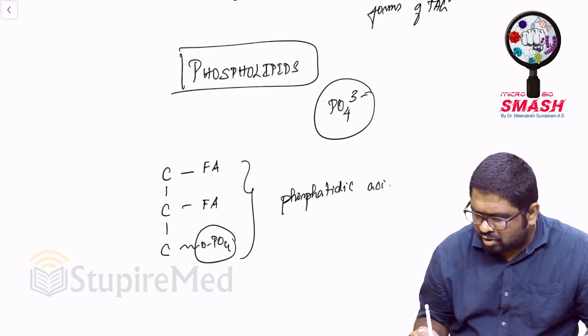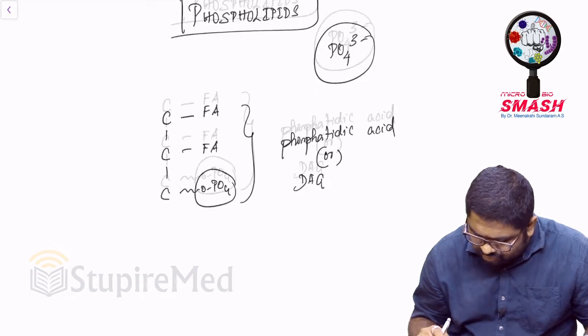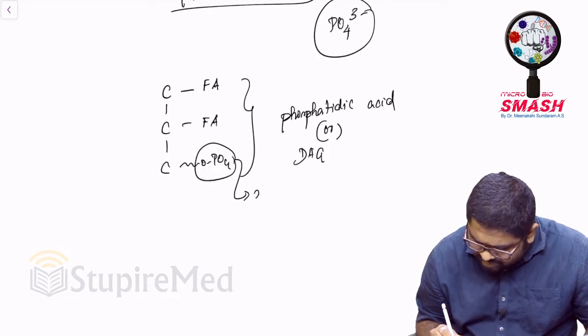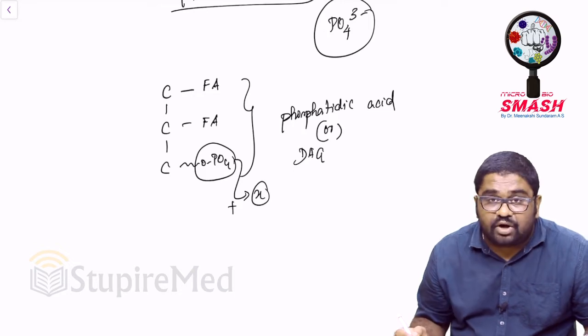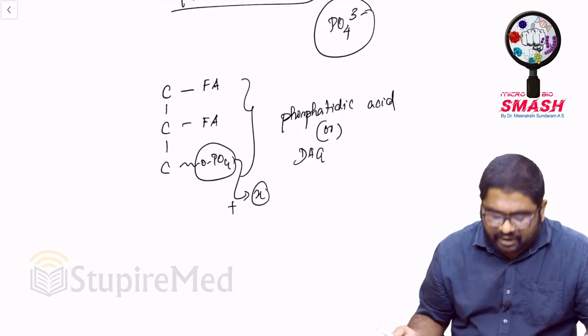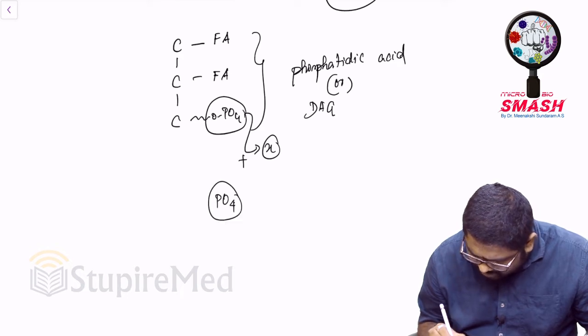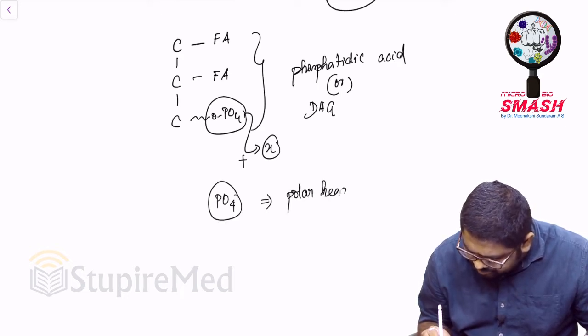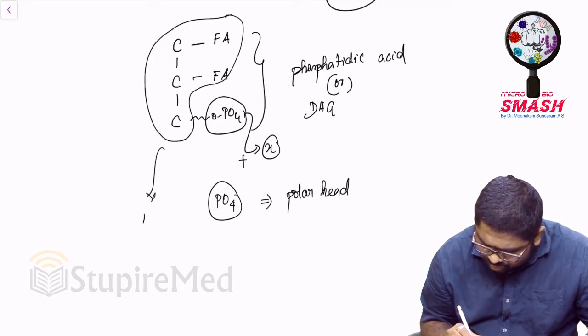Phosphatidic acid, also referred to as diacylglycerol phosphate. When you add that X factor, that extra additional factor to this, then that will be called as an extended phospholipid. The phosphate has a property that it will give you the polar head while the fatty acids are the ones that will give you the nonpolar tail.